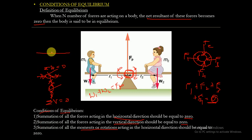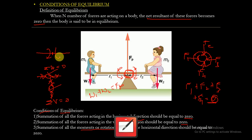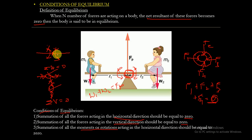Let us take a beam. The moments acting on the beam — one clockwise and one anticlockwise — cancel each other. The beam remains in equilibrium without moving in any direction or rotating. These are the three conditions of equilibrium: summation of H equals zero, summation of V equals zero, and summation of moments equals zero.